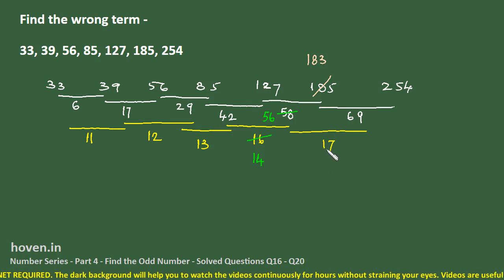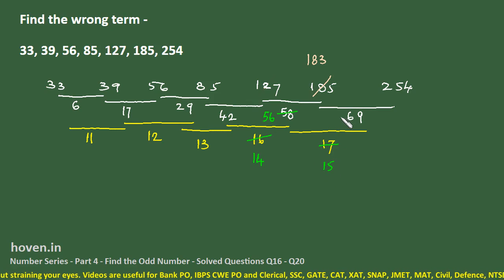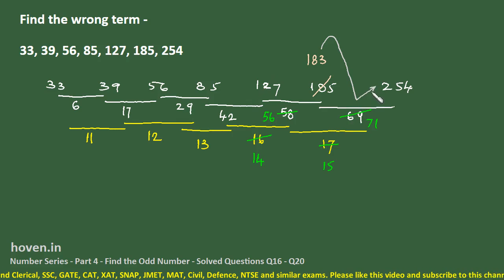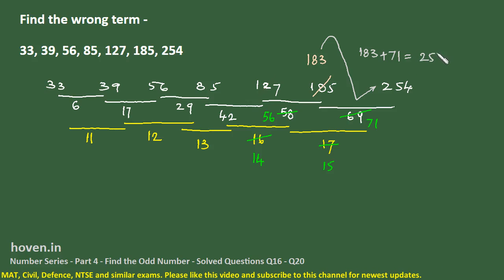So now let us revise this 17. And after this procedure we should be able to still obtain 254. If this is revised to 15, then 56 plus 15 should be 71. And 183 plus this 71 should give us 254. 183 plus 71 is indeed equal to 254.